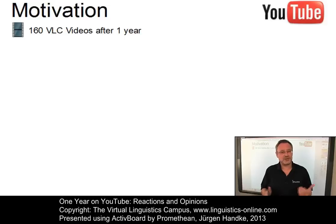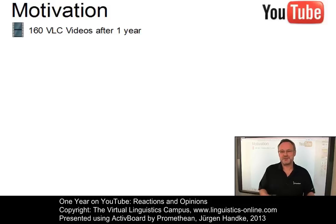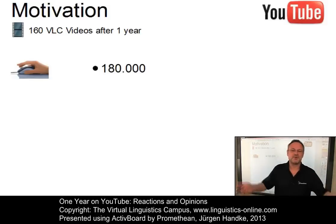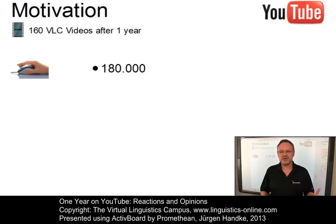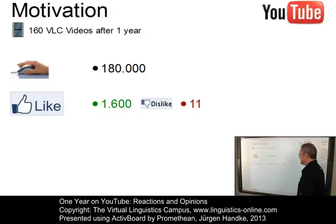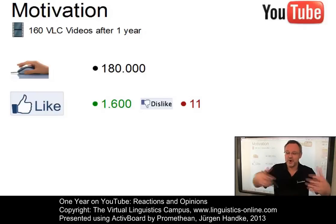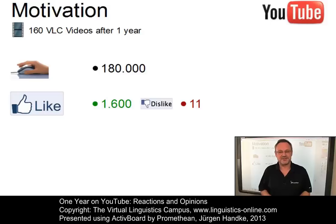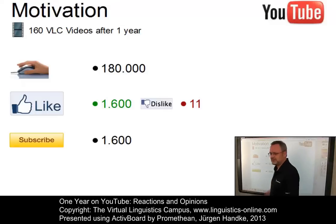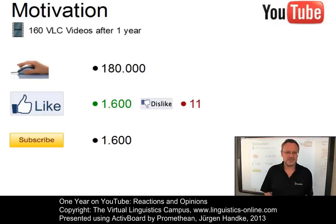But they can also demotivate you by applying harsh criticism or by giving bad marks. We prefer the first option. And in particular, we can profit from the number of clicks — that is, the actual viewers of the videos. In our case, about 160 videos after one year and 180,000 clicks. The number of likes and dislikes can be very motivating, where hopefully the number of likes is much larger than the number of dislikes. And most importantly, you can build your own community of followers — that is, your subscribers. And after one year, we've had 1,600 subscribers.